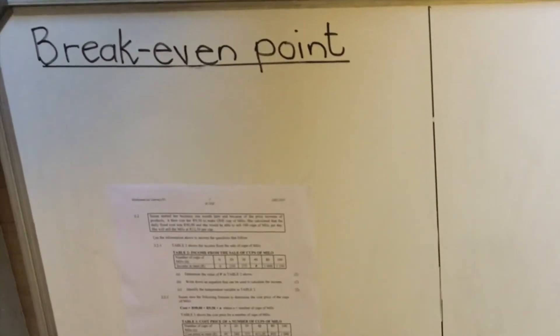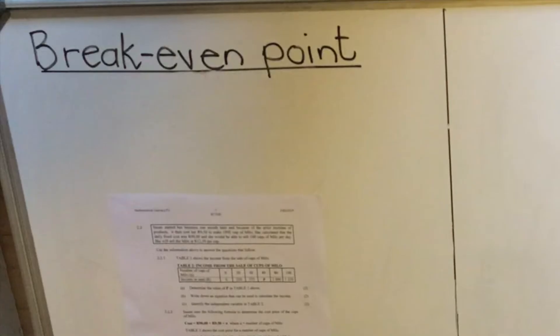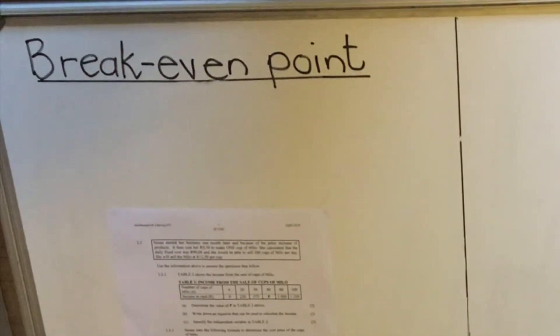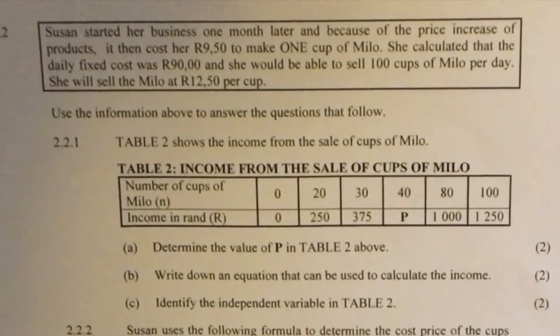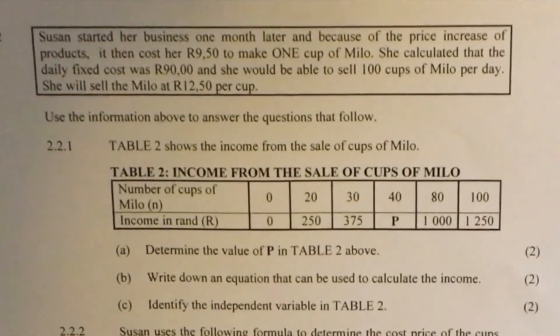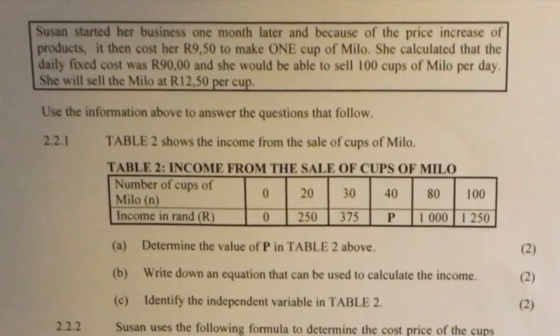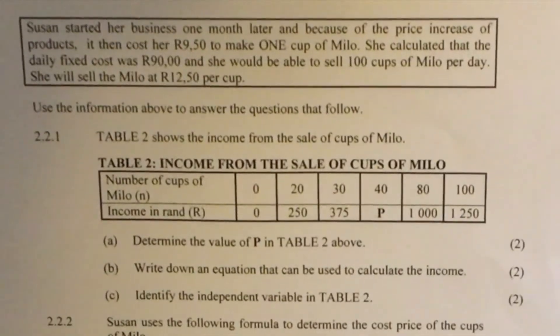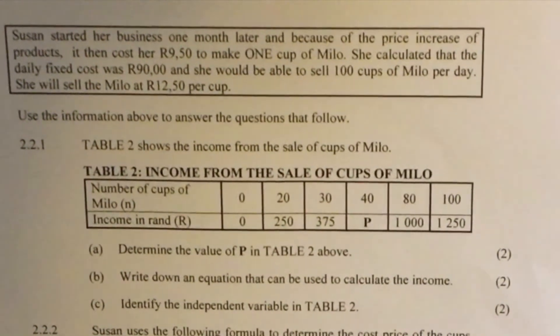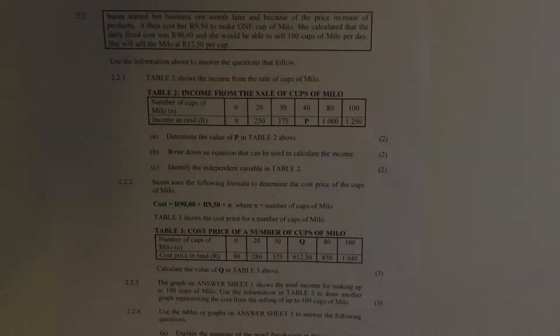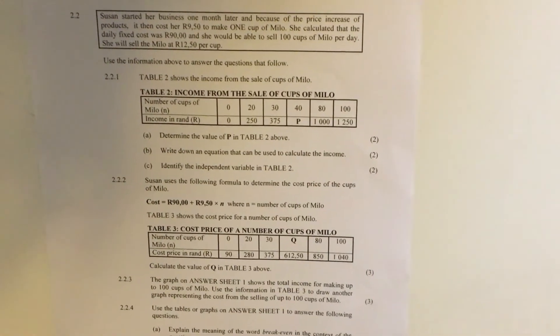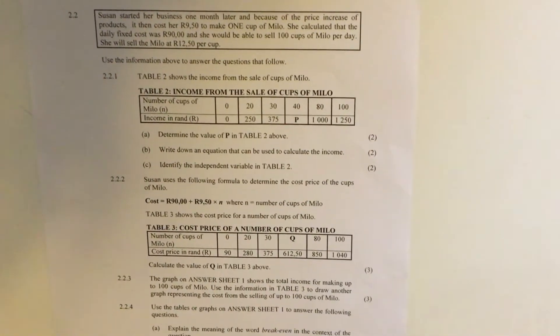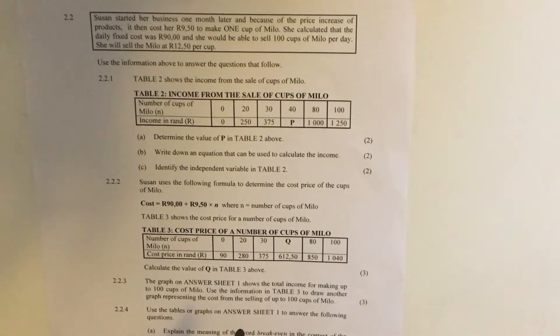There are graphs that we use to show the break-even point. We're going to look at one in this example. So we're going to look at a previous question paper that will help us understand the break-even point. Let's look at the question paper. In this question, they say Susan started her business one month later and because of the price increase of products, it then cost her R9.50 to make one cup of Milo. She calculated that the daily fixed cost was R90 and she would be able to sell 100 cups of Milo per day. She will sell the Milo at R12.50 per cup. So after reading there, you see that the story is about cups and selling cups of Milo. You read the story again before you start doing the question.